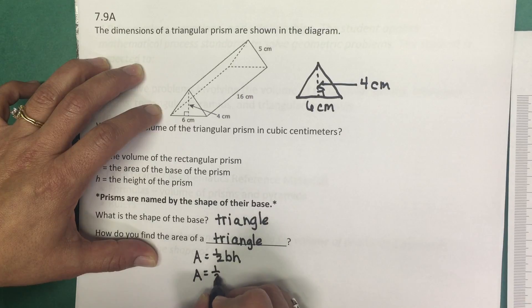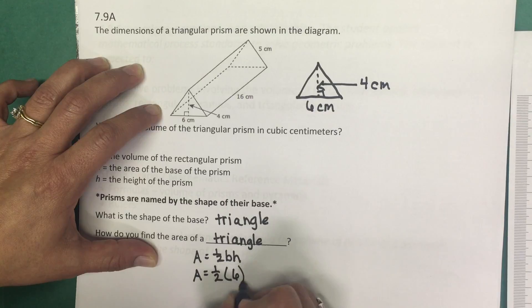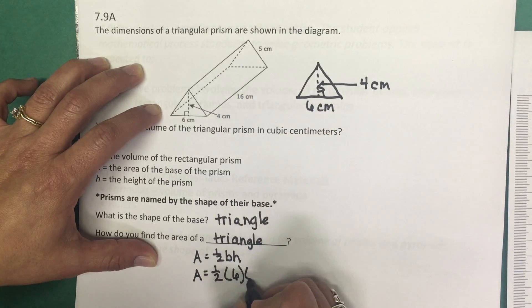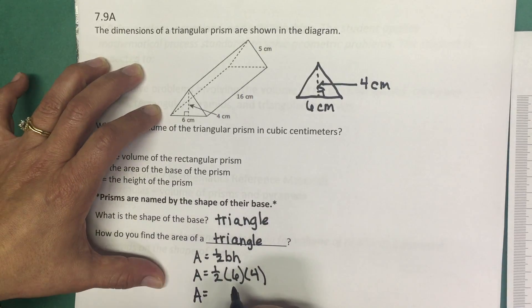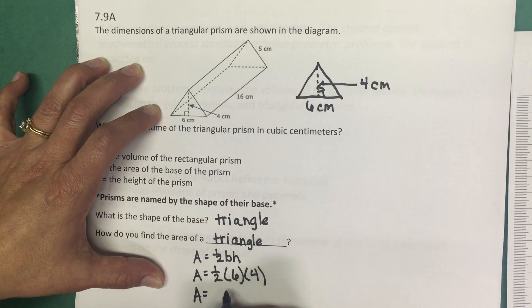So A or area equals one half times the base of that triangle, which is six, times the height of the triangle, which is four. We're going to go ahead and multiply. So I'm going to multiply half of six.